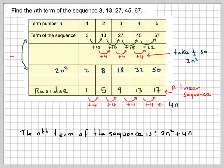Now writing down 4n term here. So 4 times 1 is 4. 4 times 2 is 8. 4 times 3 is 12. 4 fours are 16. And 4 fives are 20.